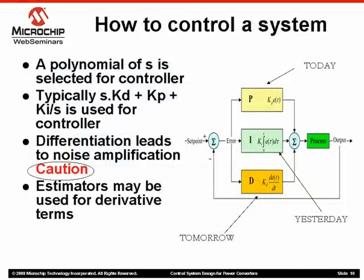Typically a PID controller is used. A PID is composed of three terms: proportional, integral, and derivative. The proportional term takes the error present now — the difference between the reference and measured value — multiplies it with a constant, and that is the proportional output. The integral term integrates the error from the past, multiplies it with a constant, and that is the integral output. The proportional term corrects for the error present now, so it's like 'today'; the integral term takes care of errors that have been present for a long time — essentially corrective action for 'yesterday'.